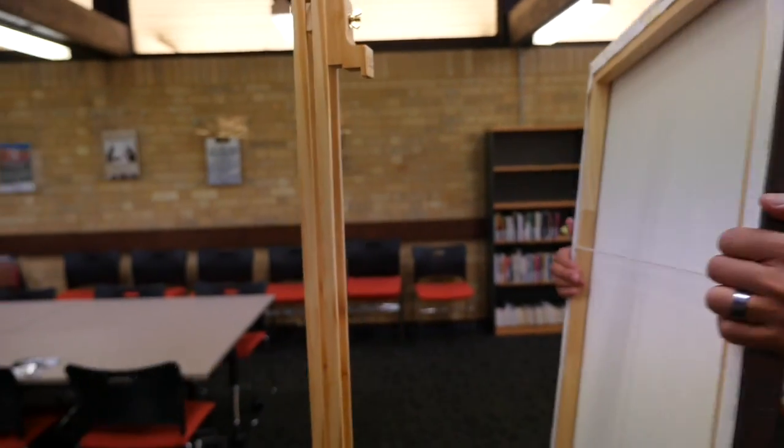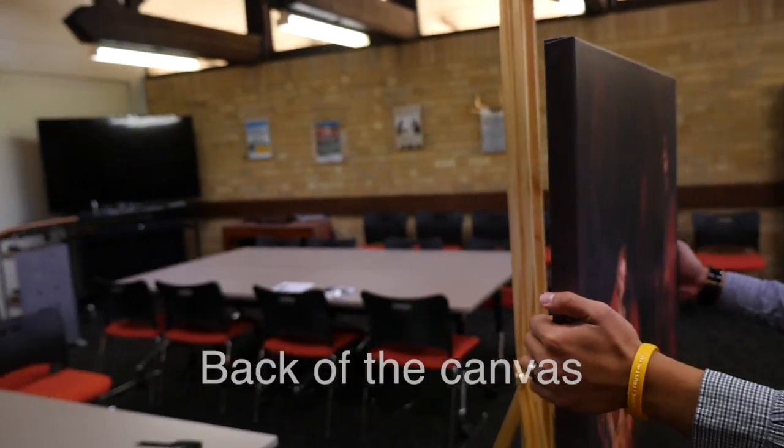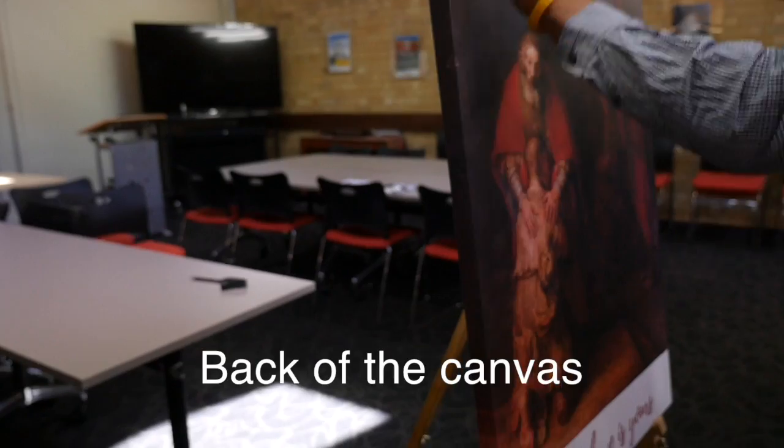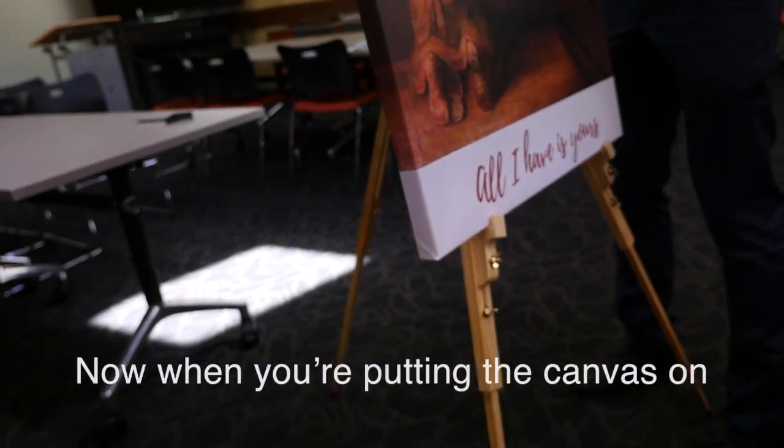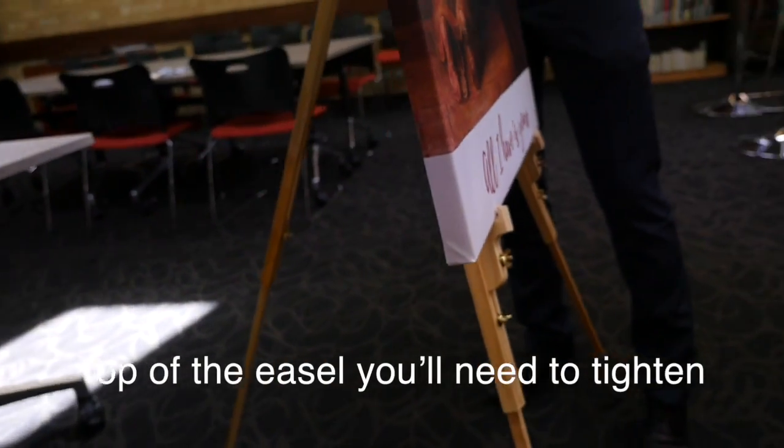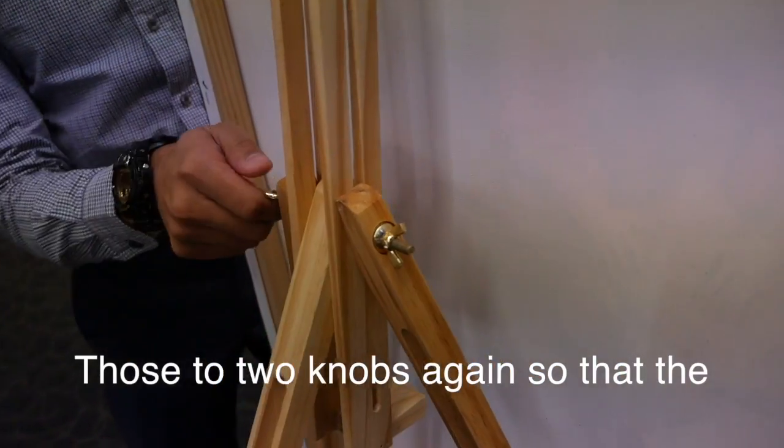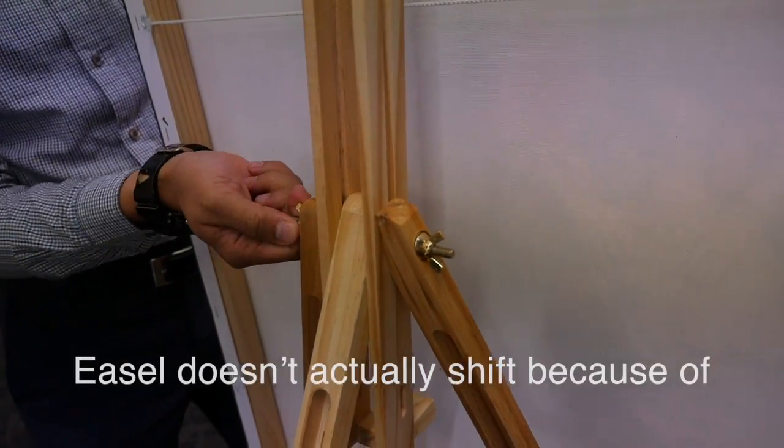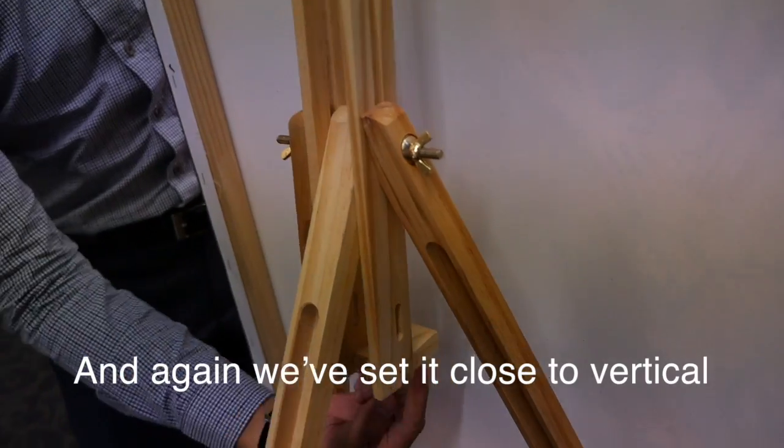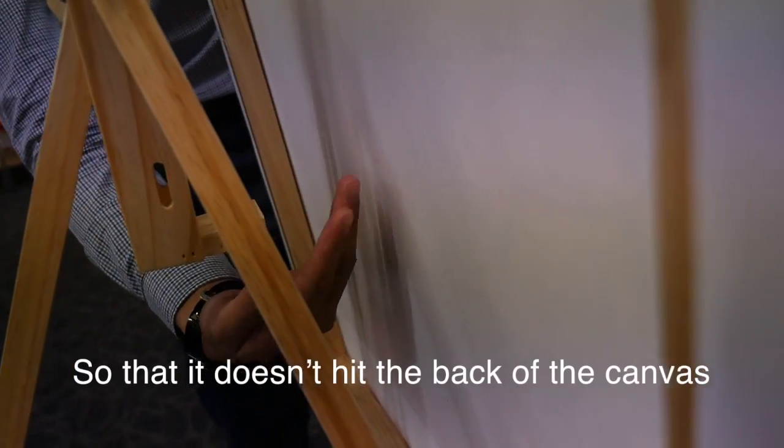The reason we do this is so that the easel doesn't actually hit the back of the canvas. Now when you're putting the canvas on top of the easel, you'll need to tighten those two knobs again so that the easel doesn't shift because of the weight. And again, we've set it close to vertical so it doesn't hit the back of the canvas.